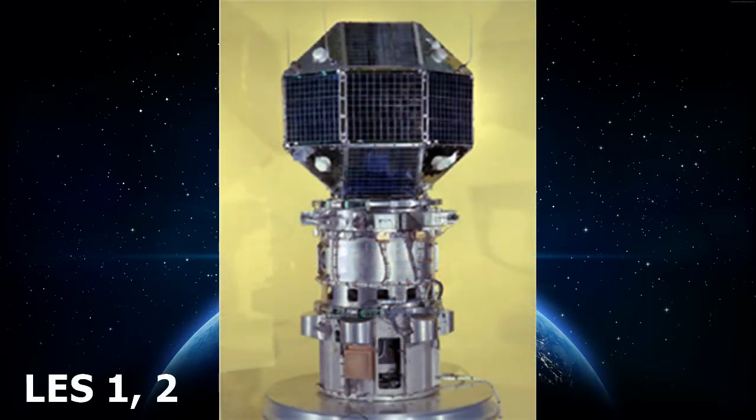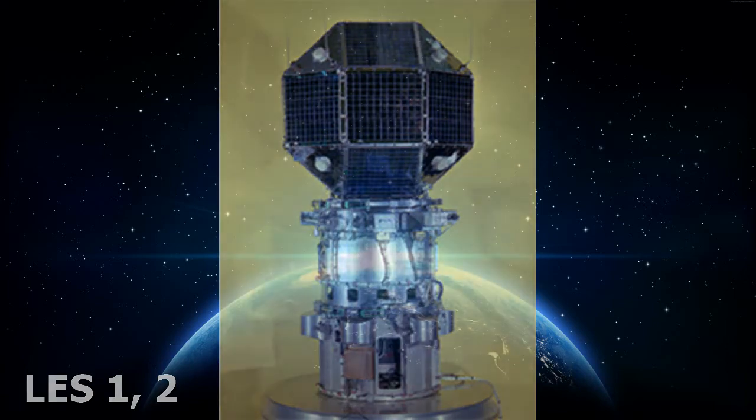The Lincoln Experimental Satellite, or LES for short, was a series of satellites built by Lincoln Lab at MIT between 1965 and 1967. Sponsored by the U.S. Air Force, they were built to test technology and techniques for space-based communications.